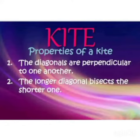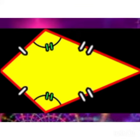Kite. In a kite, the diagonals are perpendicular to one another. The longer diagonal bisects the shorter one. Here we can see the picture of a kite.